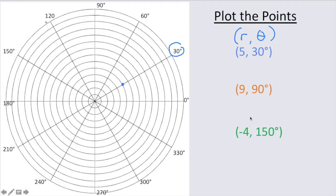All right, let's try the orange one. 9 comma 90 degrees. So 90 degrees is due north up here.